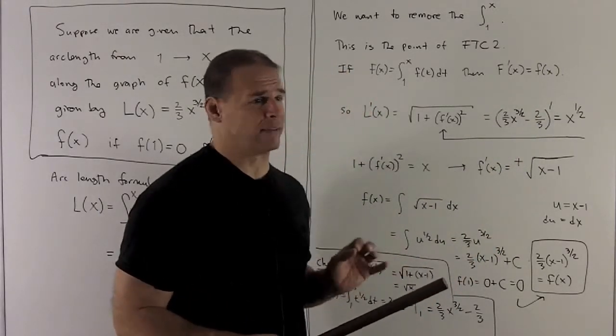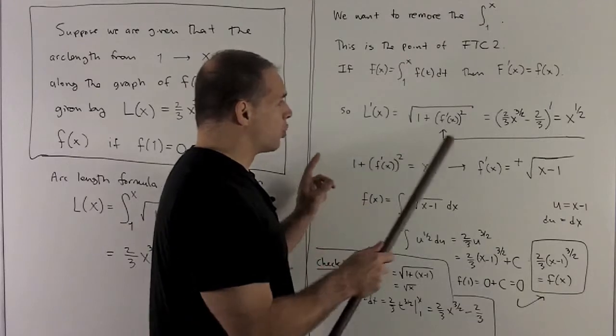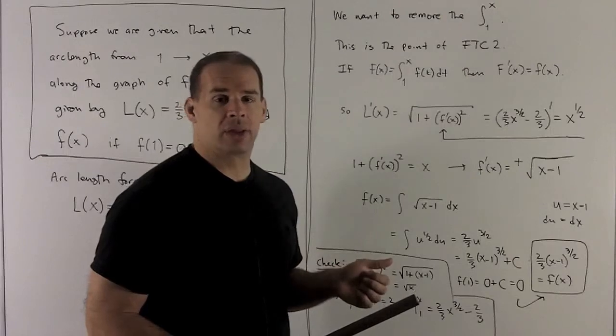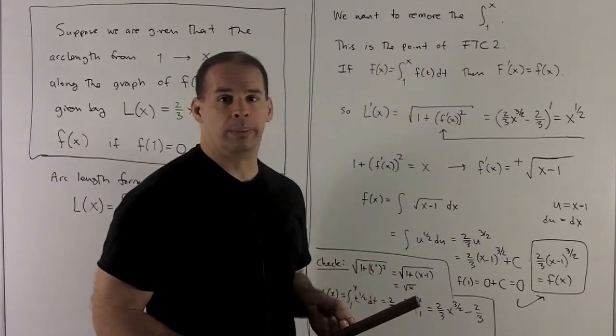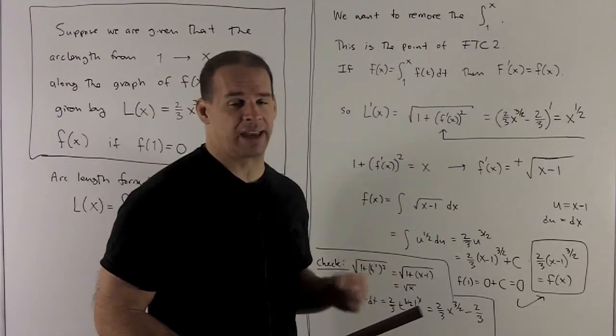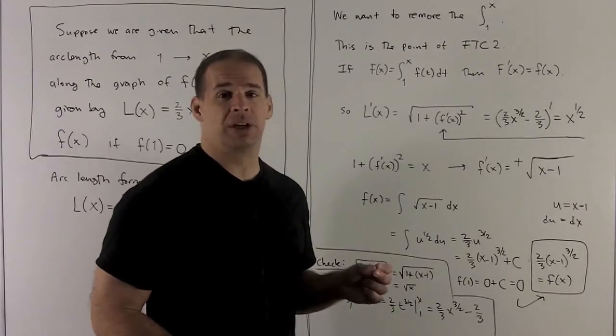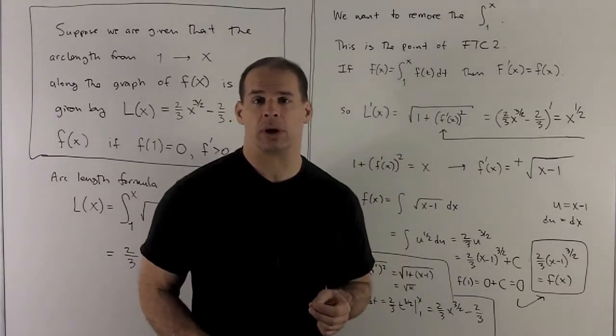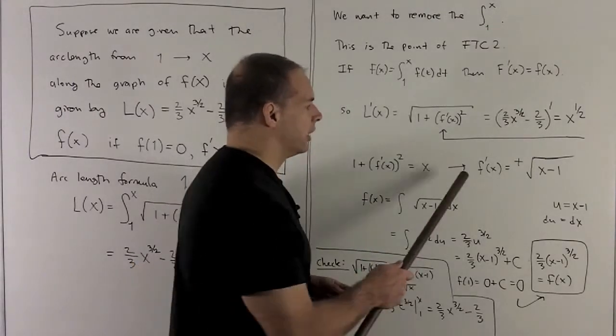And now I can start unraveling. Squaring both sides, 1 + f'^2 = x. The 1 goes to the other side. And then we can square root. When I square root, I get two solutions, the positive and the negative solution. By assumption, we want only the positive solution. So the negative solution we throw away. So here is my f'.